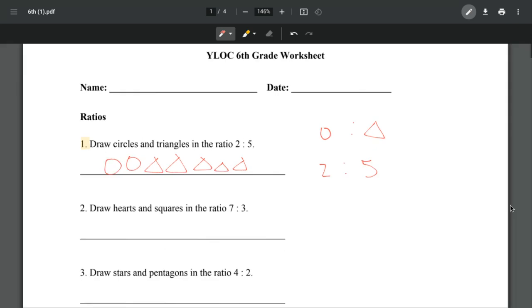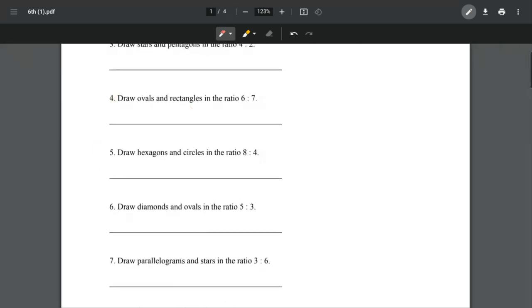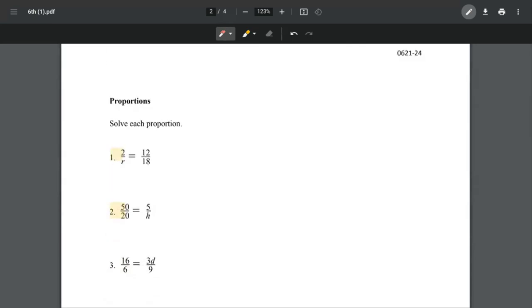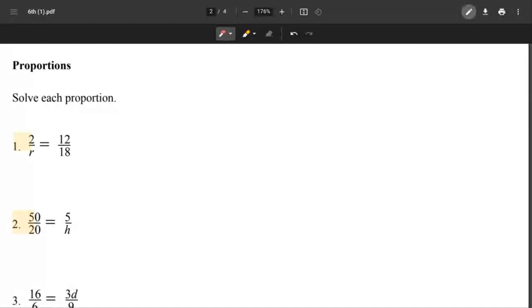Go ahead and finish this page, and then we can do proportions together. So number one, we're solving proportions by cross multiplying. That becomes 12r equals 36. We're solving for r, the variable, so we divide both sides by 12, and r becomes 3.